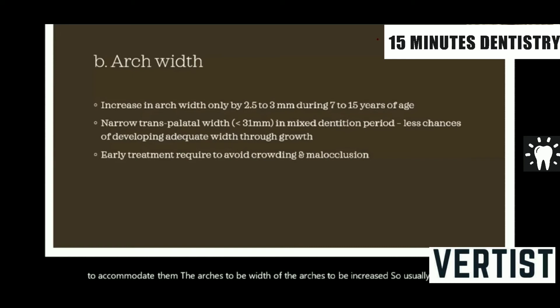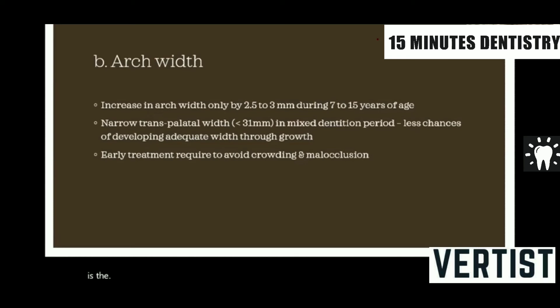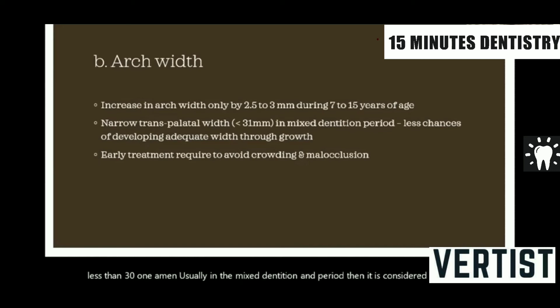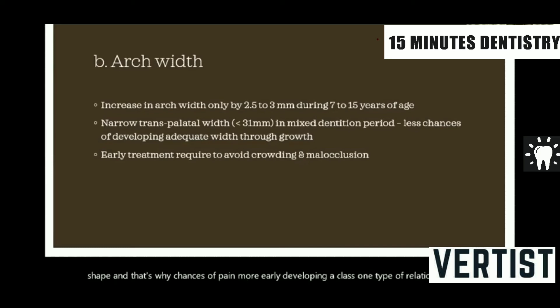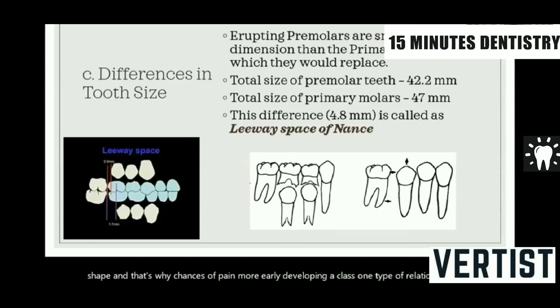The intercanine width gets increased by around 2.5 to 3 millimeters in general. Those persons who have a transpalatal width — the width from the buccal cusp tip of the right canine to the buccal cusp tip of the left canine — if it is less than 31 mm in the mixed dentition period, it is considered that such a person would have a more V-shaped arch rather than a proper U-shaped arch. Consequently, the chances of developing a Class I type of relationship will be lesser. In such cases, treatment can be initiated in earlier stages using appliances that increase the palatal width.